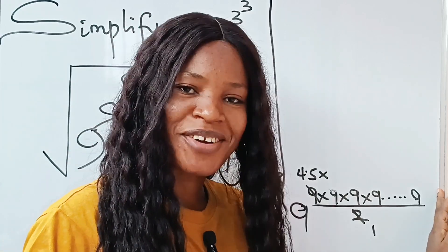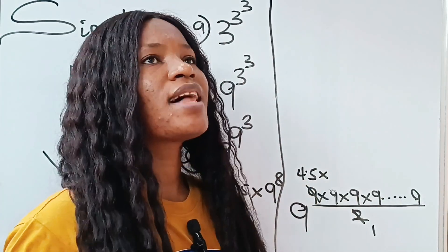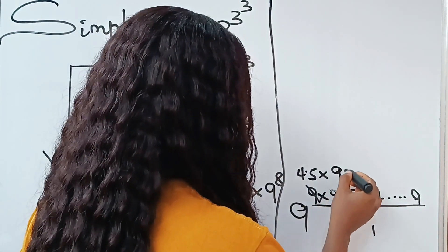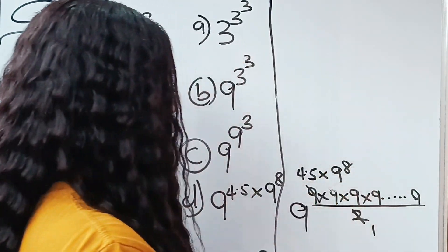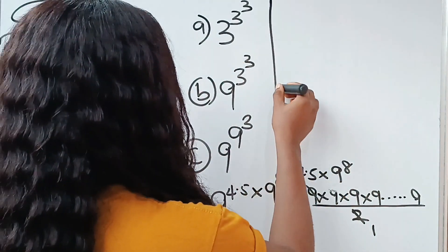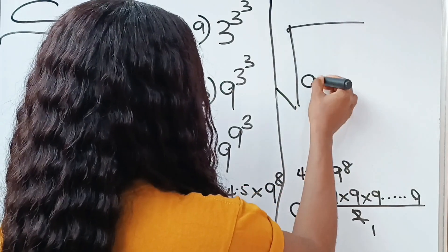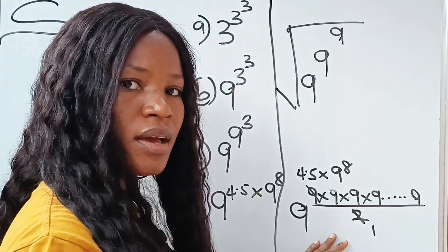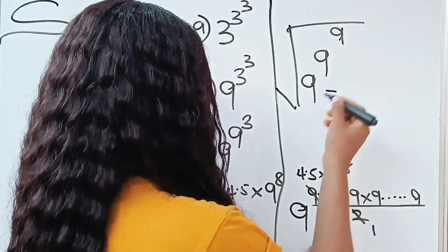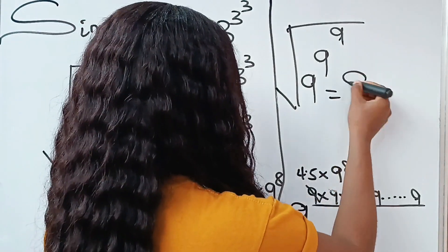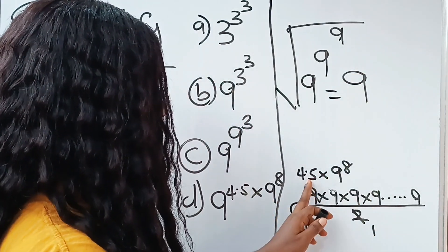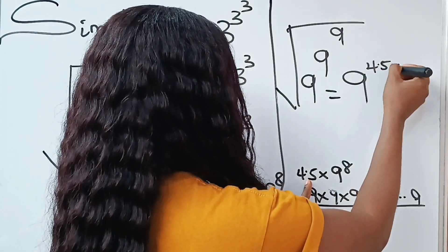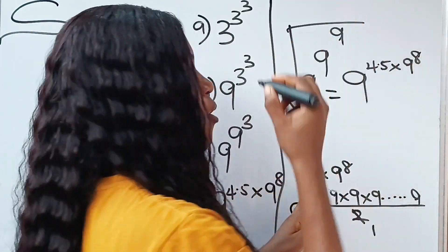From the remaining eight nines in the numerator, that gives us nine to the power of eight. So that simply means that the square root of nine to the power of nine to the power of nine equals nine raised to the power of 4.5, multiplied by nine to the power of eight.